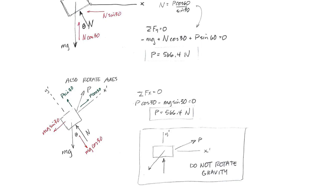With the rotated axes, mg is still going straight down, and there's still the angle theta between the normal force and the weight. But now mg has two components: mg cosine theta going into the hill and mg sine theta pulling it down the hill. Force P now has just one angle of 30 degrees, giving P cosine 30 and P sine 30. To find P, sum the forces in x: mg sine 30 equals P cosine 30.